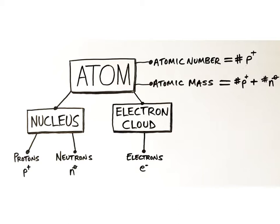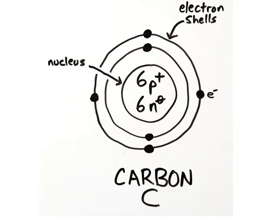Electrons are the smallest particles with each containing a negative charge. Electrons are symbolized by an E with a minus sign superscript. All electrons move around the nucleus within the electron cloud, but some groups of electrons move within specific regions of the cloud called electron shells.